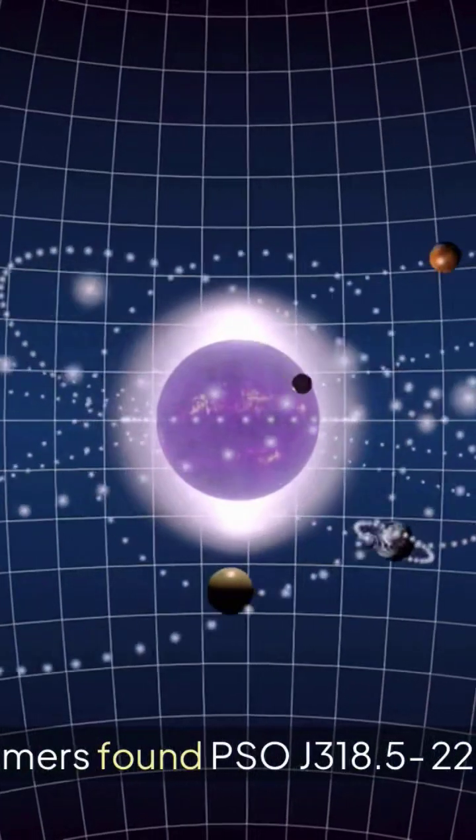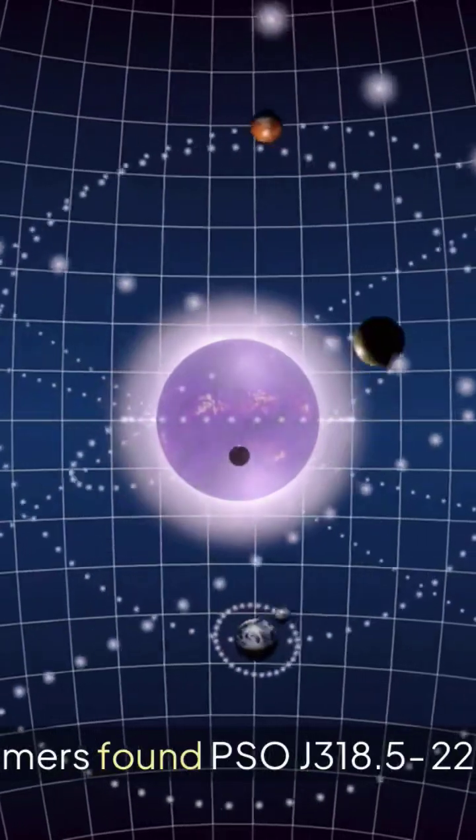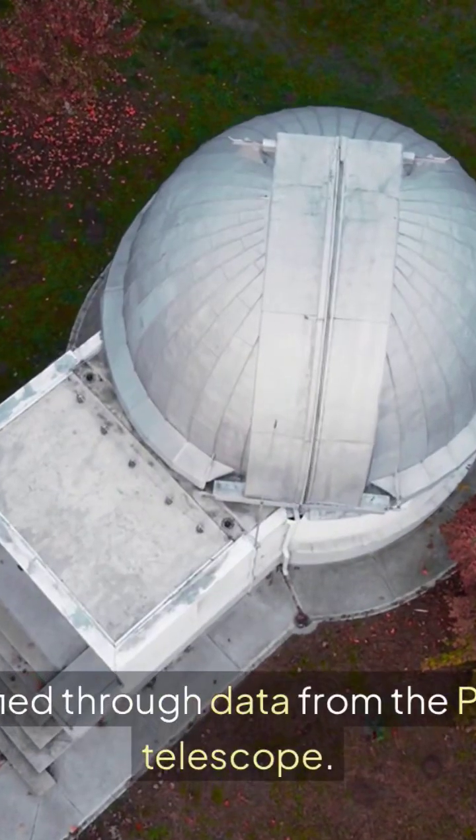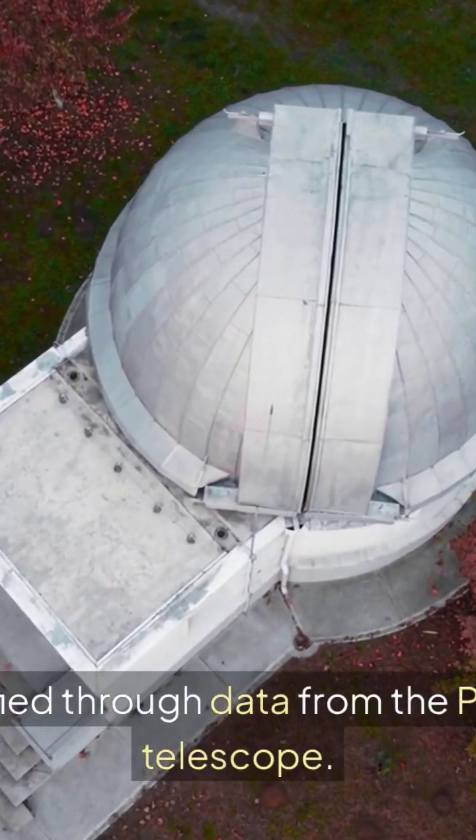Astronomers found PSO J311.522 in 2013. It was identified through data from the Pan-STARRS1 telescope.